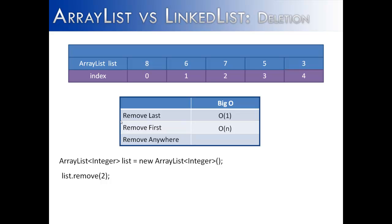Removing an item anywhere inside of the list is going to be similar to removing the first item. So if we were going to remove an item from the second index, the 7, if all we had to do is remove it, it would have a Big O of 1 or constant time. But we have to fill the void, and that gives it a Big O of N because of the shifting that has to occur. There will not always be N shifts, but that is the average, and that is where we get a Big O of N. An ArrayList does best when removing the last item, but removing the first item or any other item requires a shift, giving it a Big O of N.